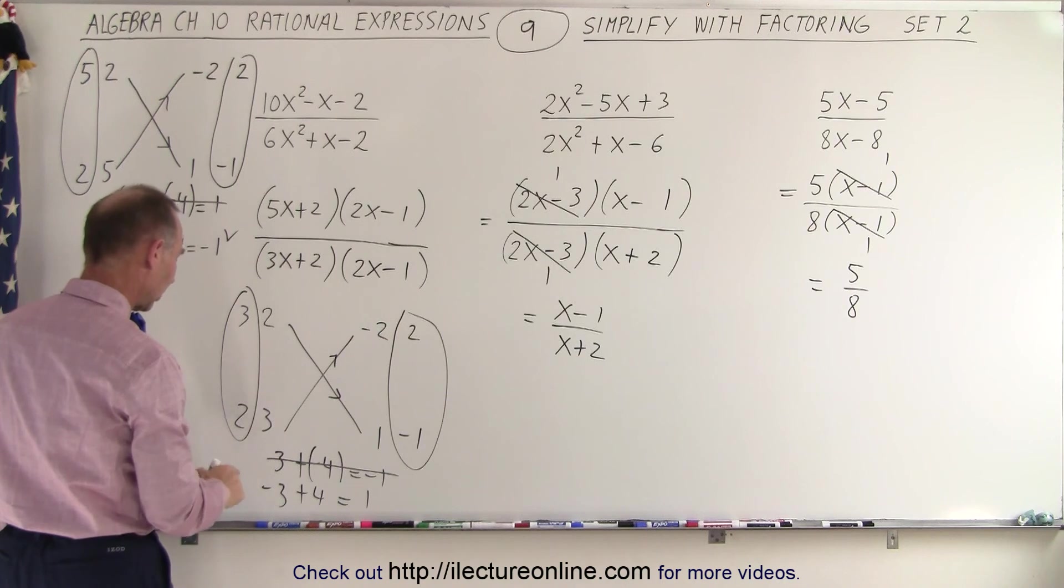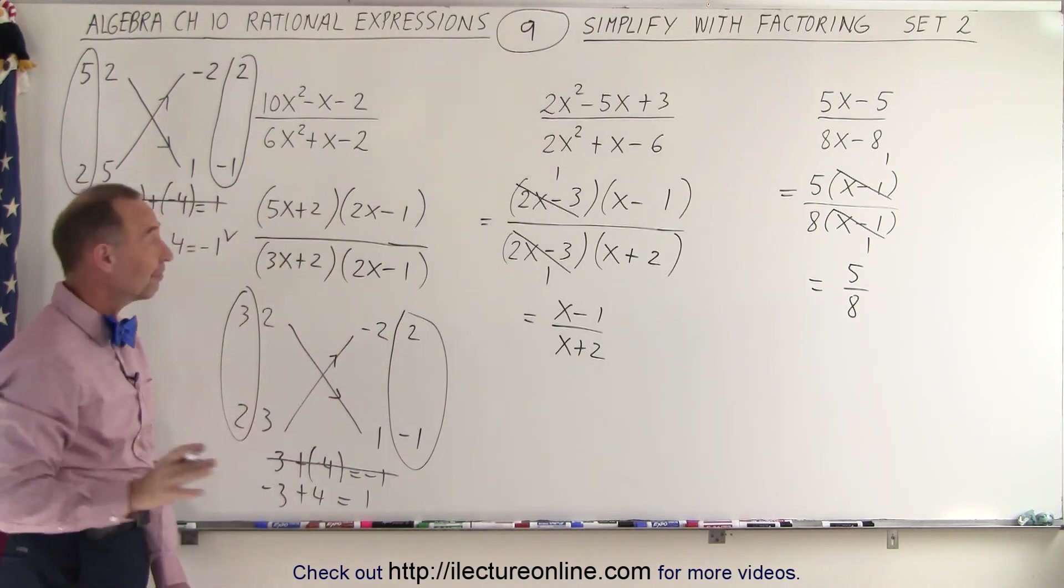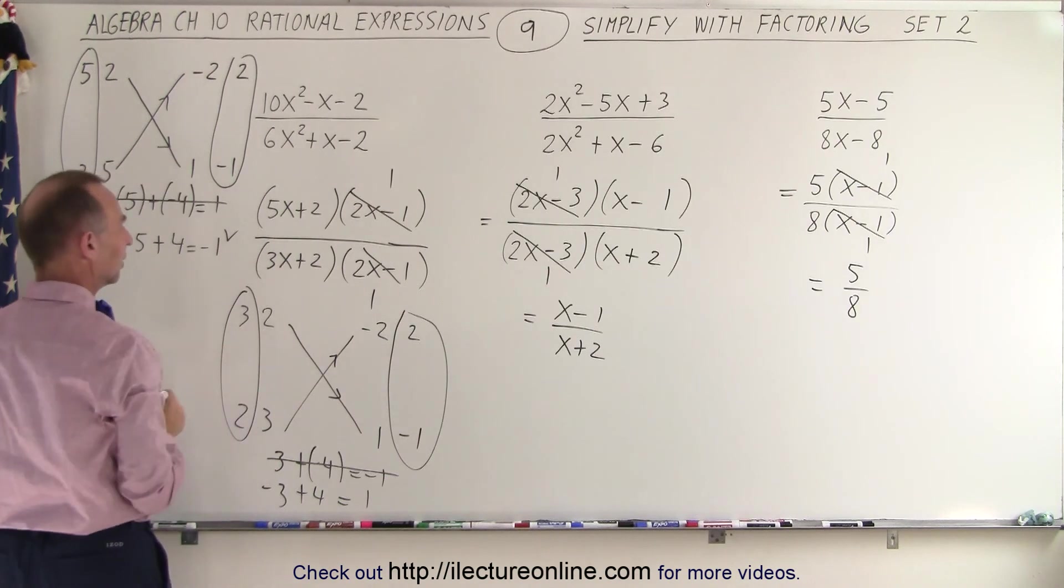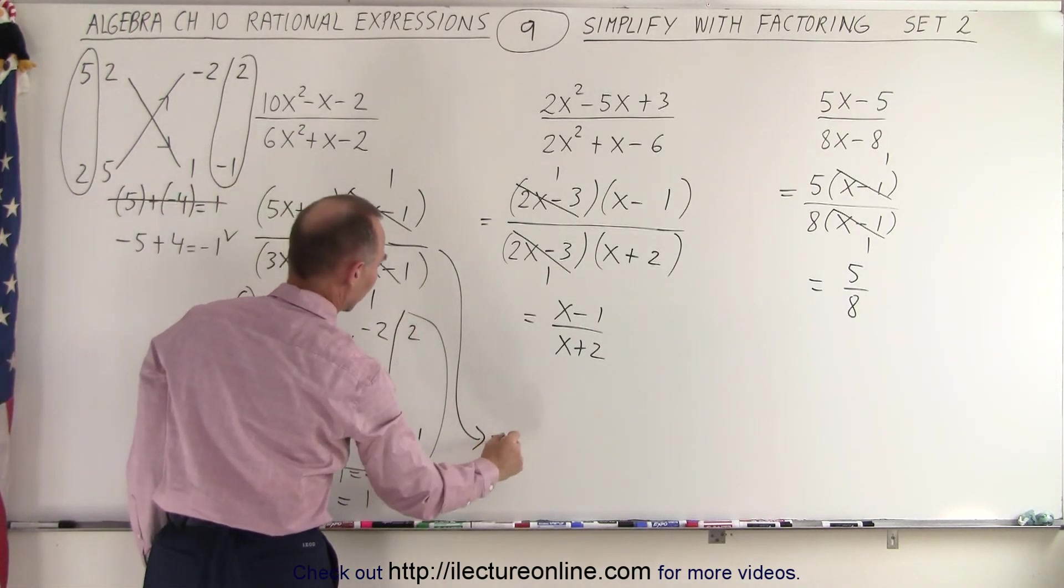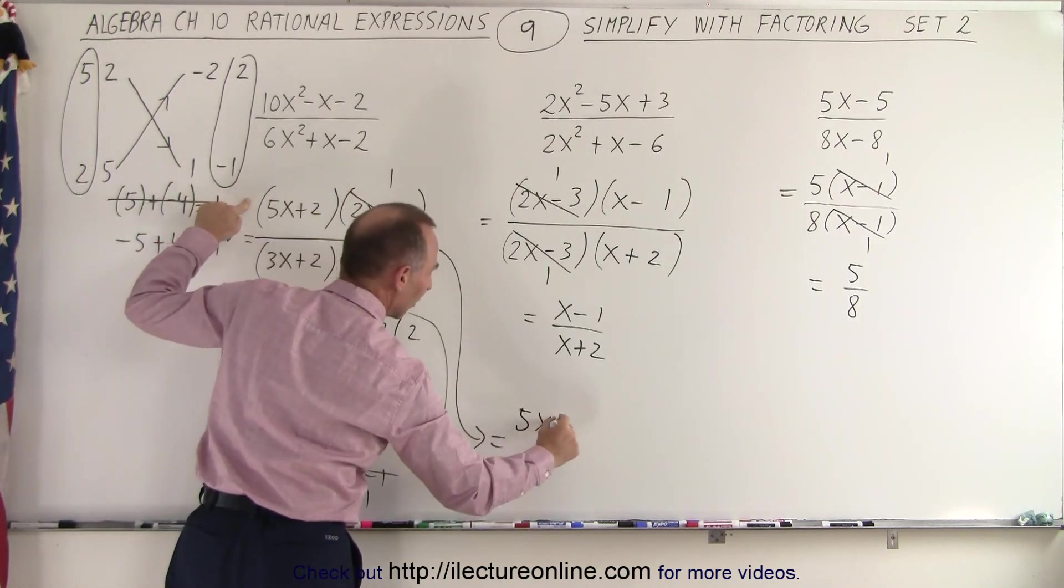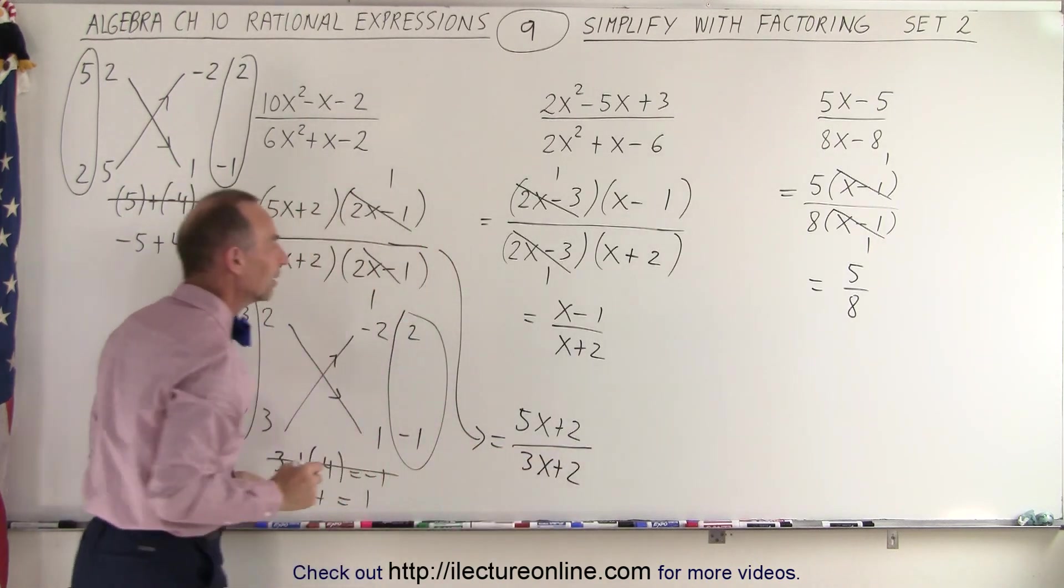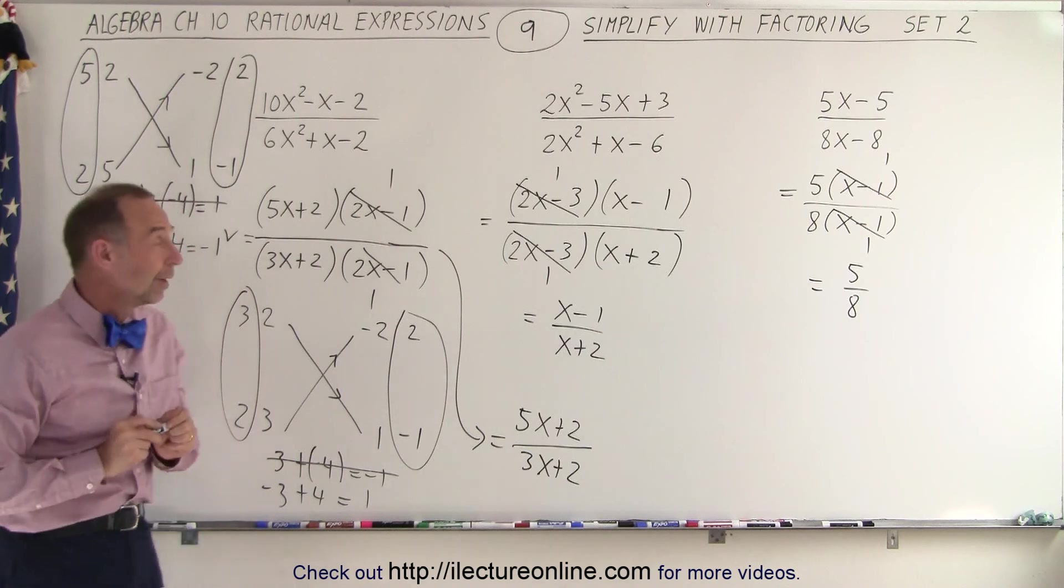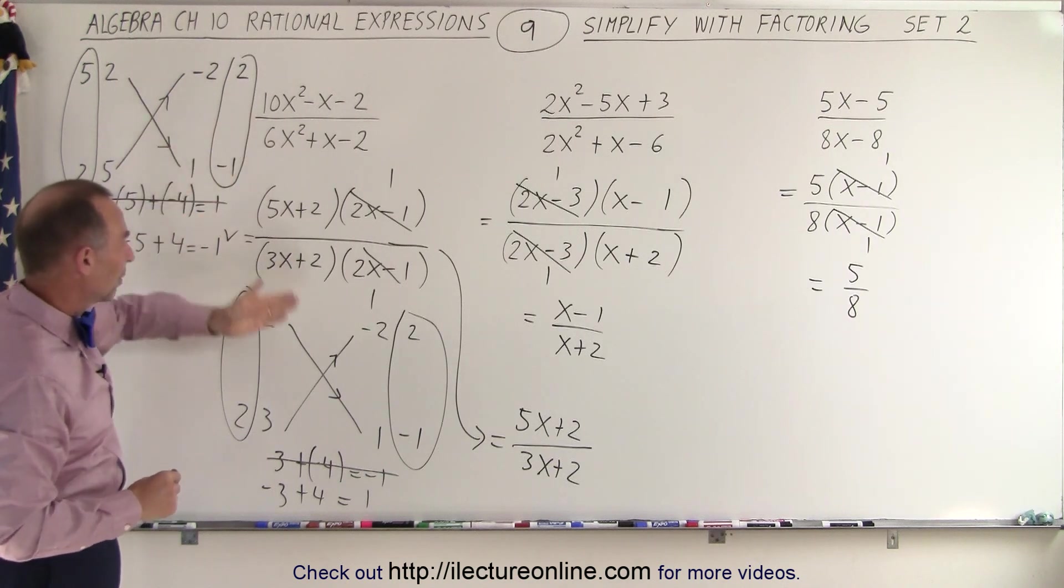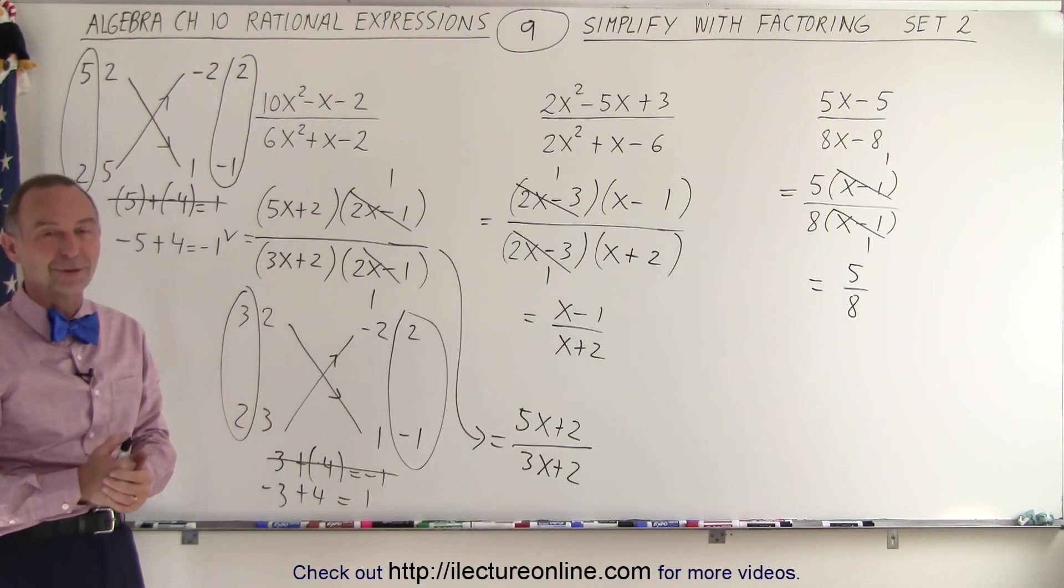So notice here, let me do a quick check again. I need a positive 1, I had a positive 1, so that was good. Now the common factors are 2x minus 1 and 2x minus 1, so they cancel out. I'm left with a 5x plus 2, and let me put an equal sign there. So we have a 5x plus 2 for the numerator, and we have a 3x plus 2 for the denominator. And that's a simplified form of our third example. So if we get into trouble, and the coefficients become a little big, we may want to resort to the FOIL method to get us the right factors. And that is how it's done.